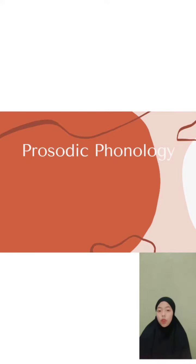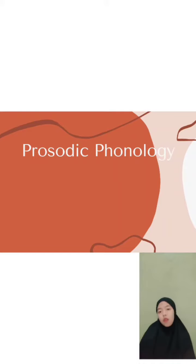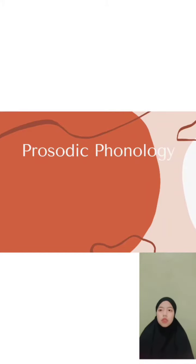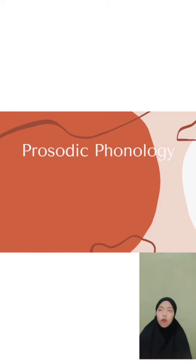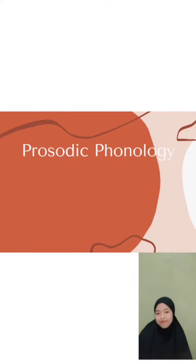Assalamualaikum warahmatullahi wabarakatuh. My name is Rizka Khoirugusa, and I'm from TBI2. My ID number is T20196076. Today I want to represent more phonemic rules, so let's check this out.